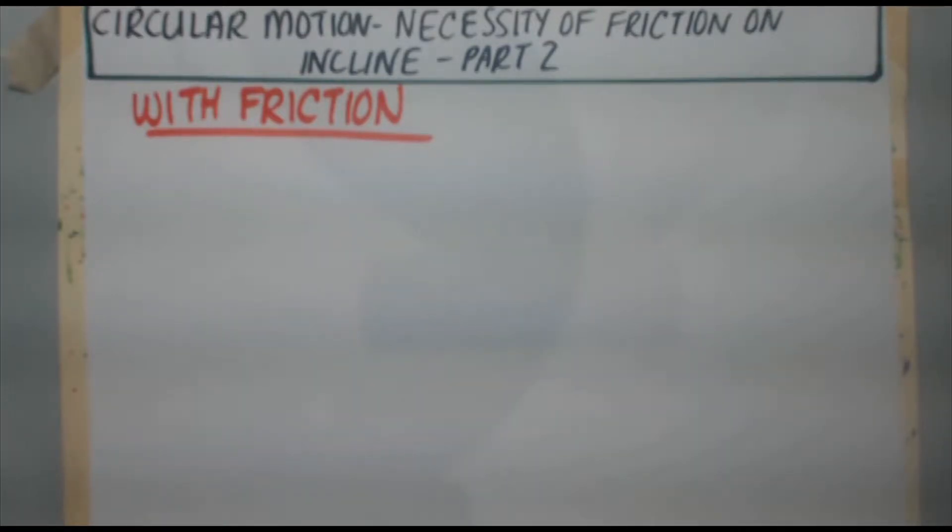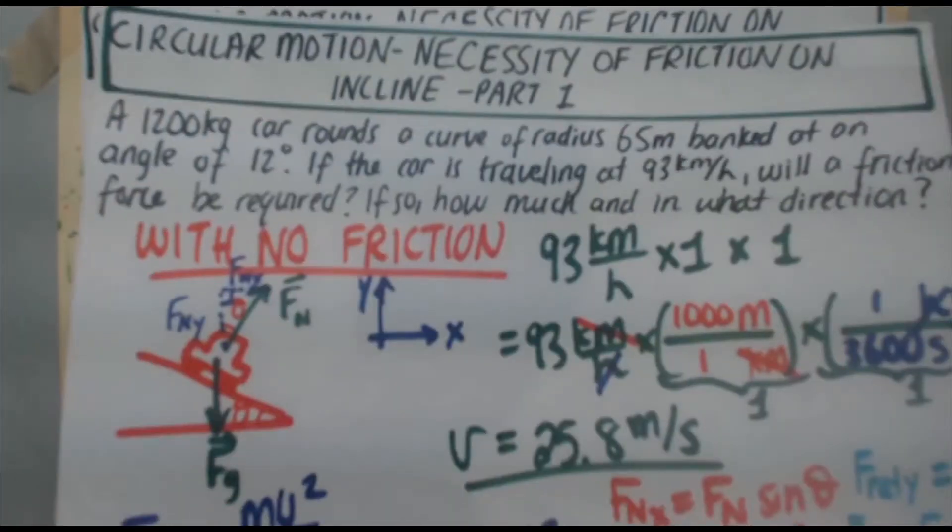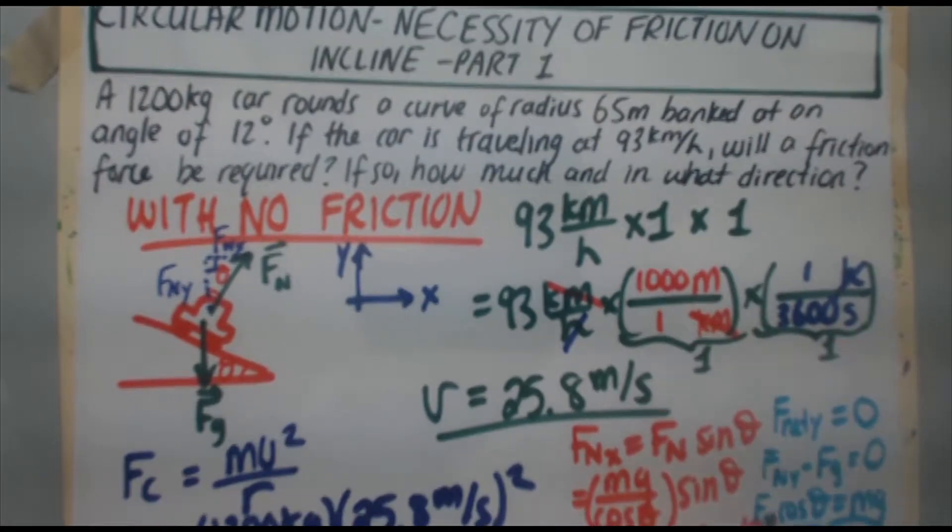To refresh your memory, in video 81 we looked at the following problem. A 1200 kilogram car rounds a curve of radius 65 meters banked at an angle of 12 degrees. If the car is traveling at 93 kilometers per hour, will a friction force be required? If so, how much and in what direction?